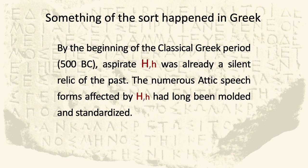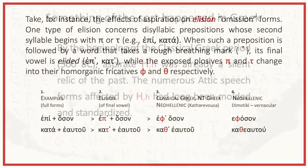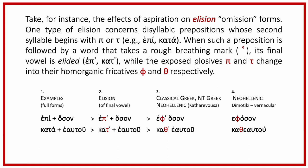Something of the sort happened in Greek. By the beginning of the classical Greek period, the aspirate was already a silent relic of the past. The numerous Attic speech forms affected by the aspirate had long been molded and standardized. Take, for instance, the effects of aspiration on elision forms. One type of elision concerns the syllabic prepositions whose second syllable begins with P or T, like EPI, KATA. When such a preposition is followed by a word that takes a rough breathing mark, its final vowel is elided, while the exposed plosives P and T change into their homorganic fricatives F and TH, respectively.